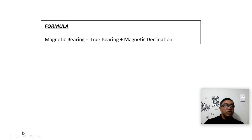The first thing we'll be looking at is the formula. We know magnetic bearing equals true bearing plus magnetic declination. So we have to do it in three steps.